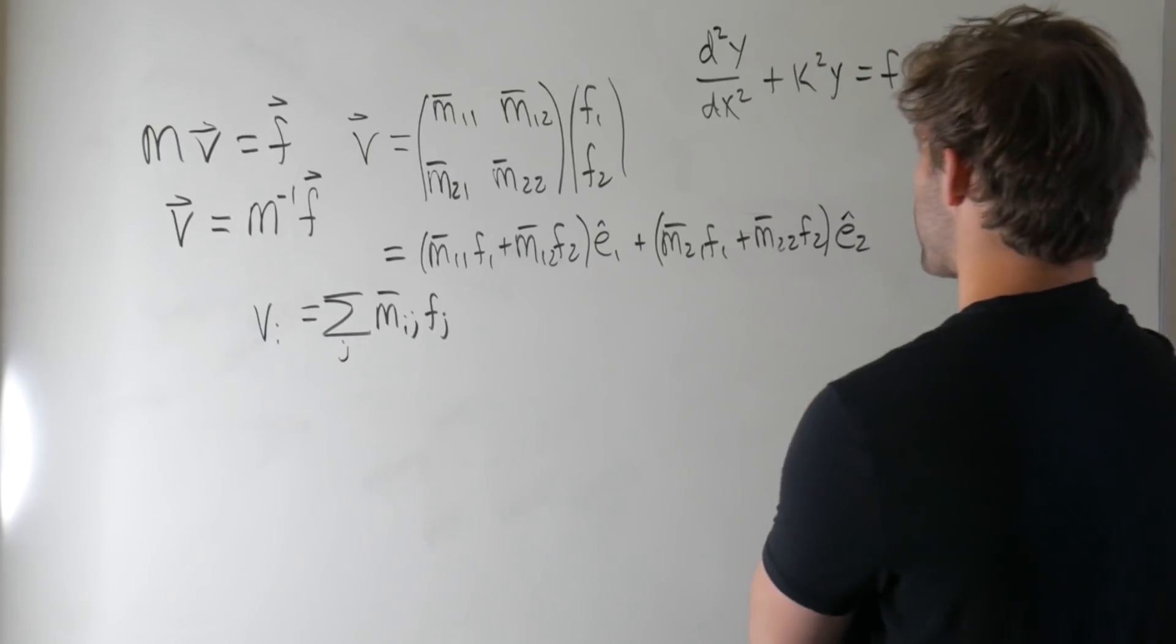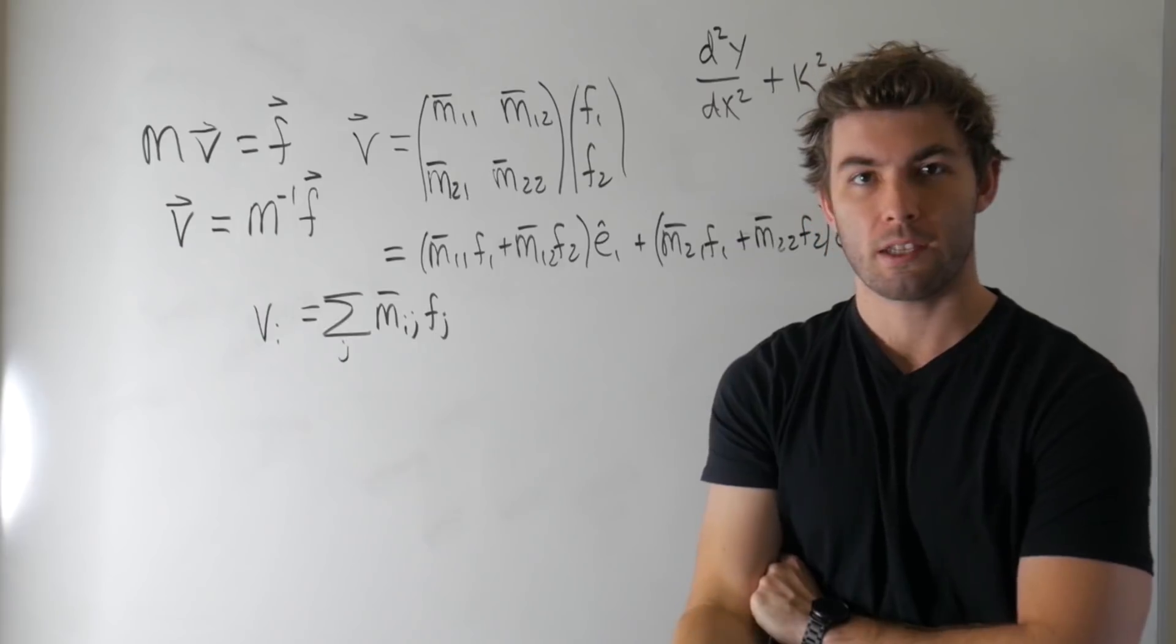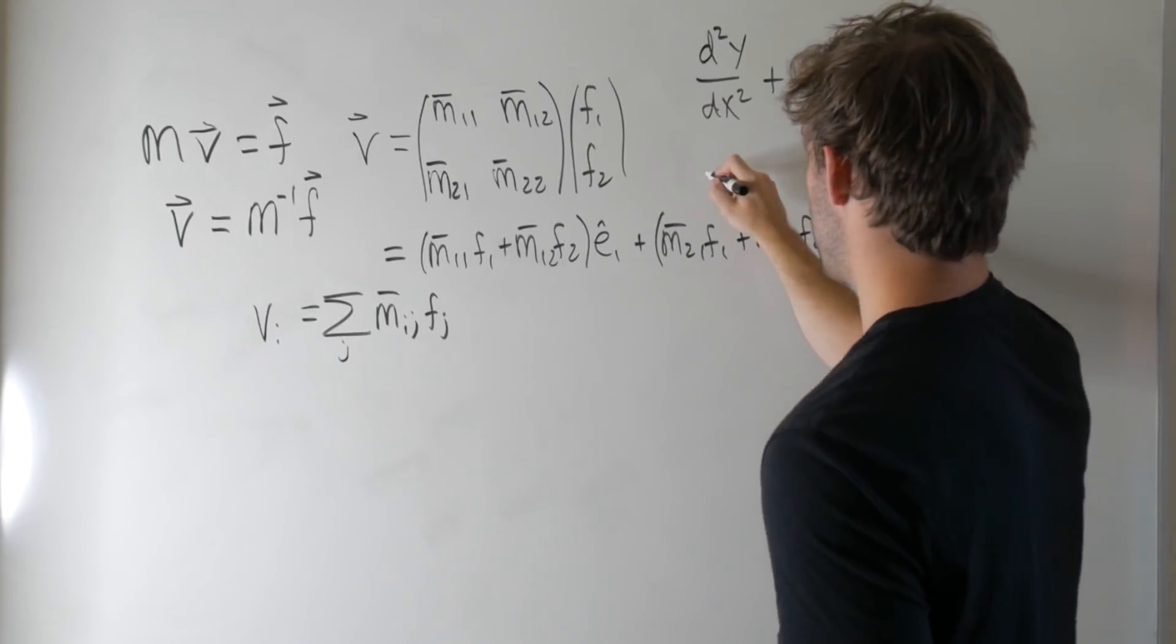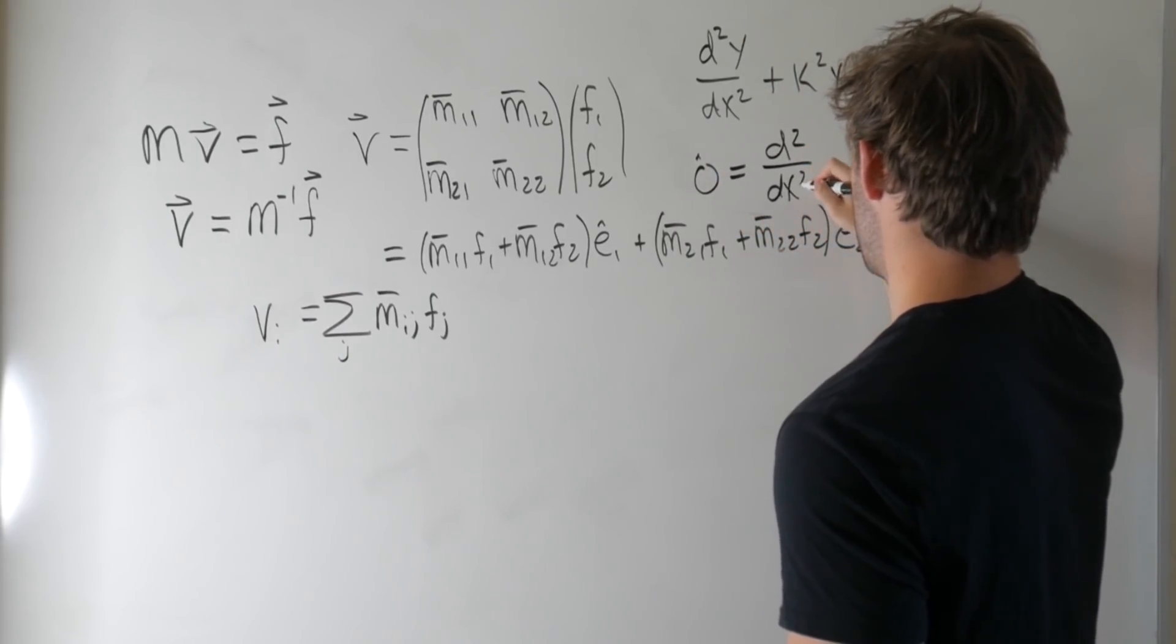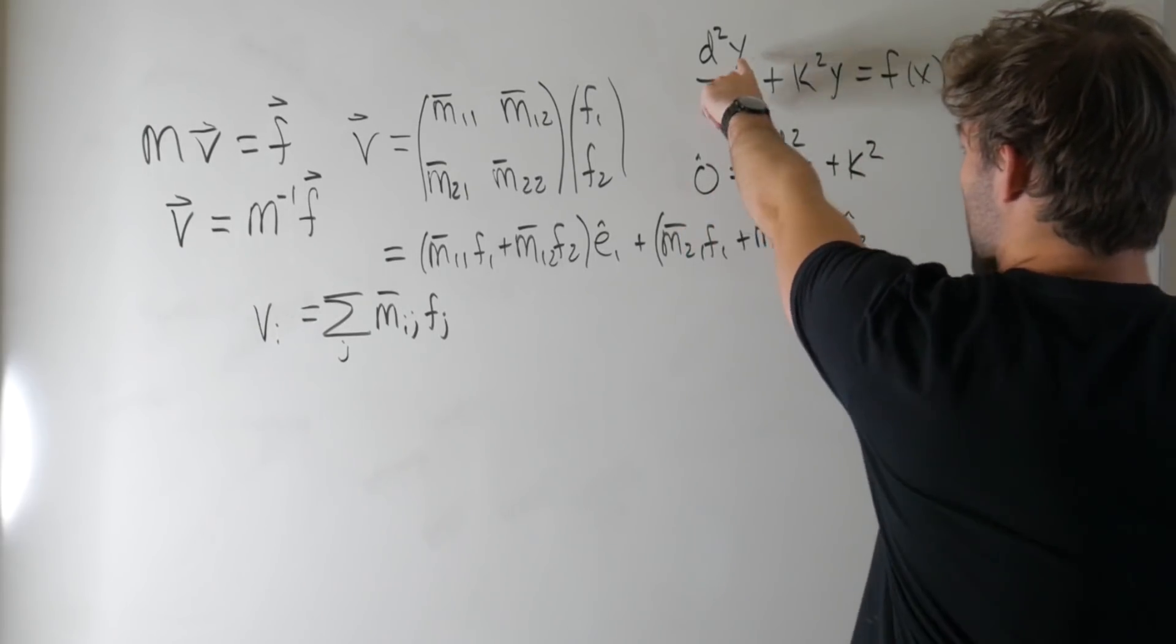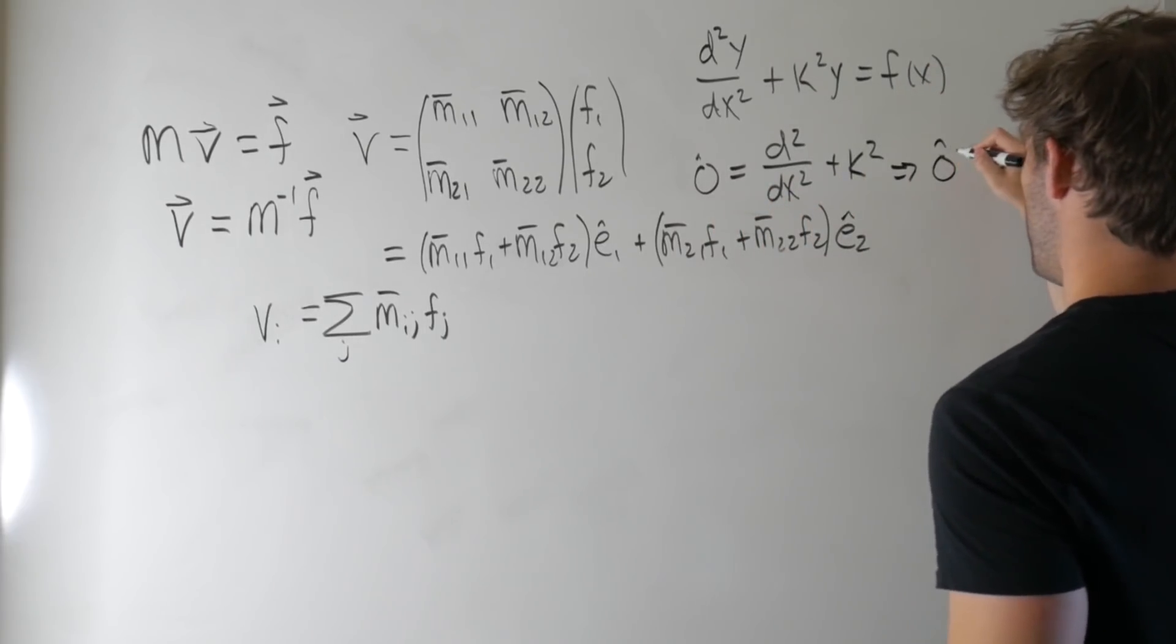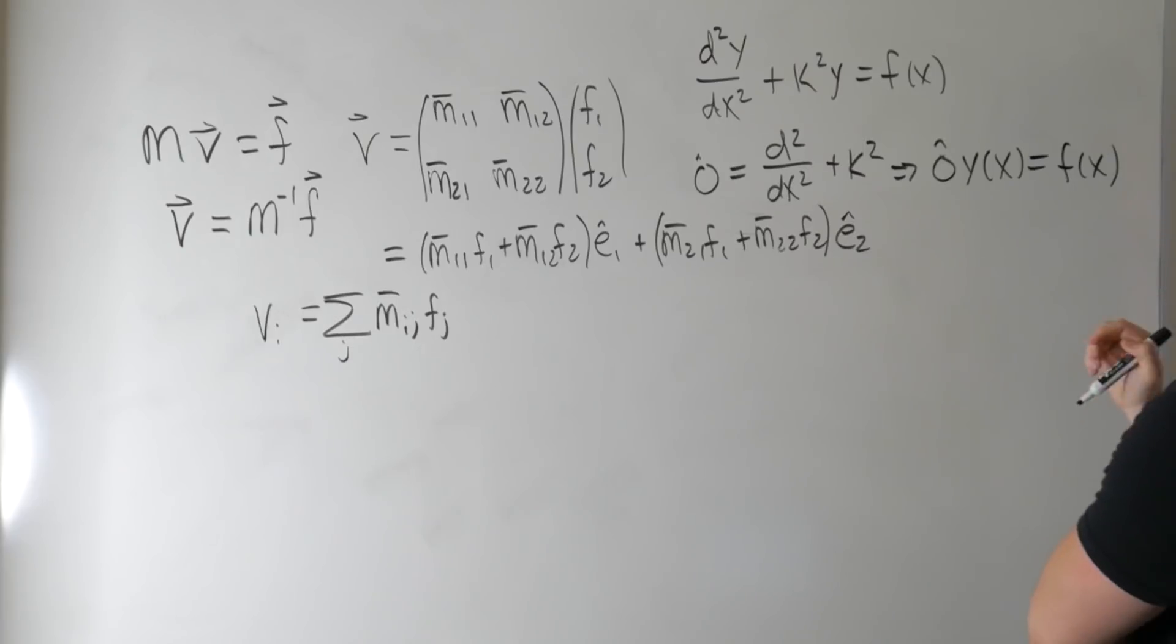We're assuming Y just has X dependence. We can define some operator. If you've had quantum mechanics, you're familiar with defining differentials as operators. So we can define some O and define that equal to D squared dx squared plus K squared. So O acting on Y, these just distribute, so to speak, we get O Y, let's call it Y of X, is equal to F of X. So this just reproduces this. This is just another way of representing this.